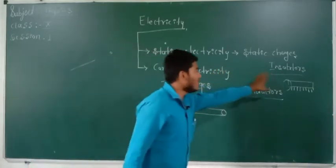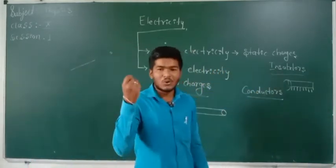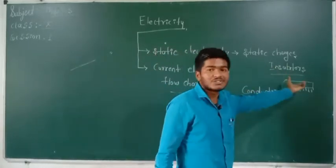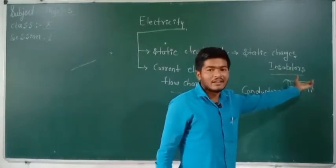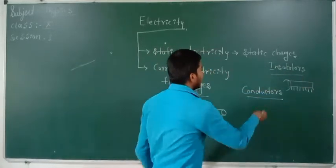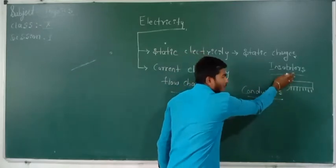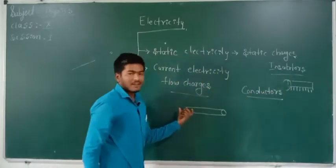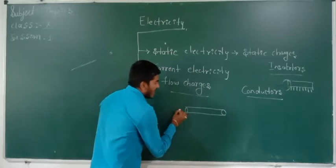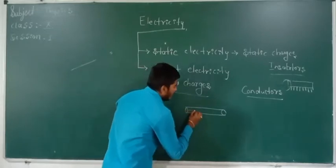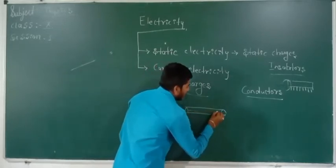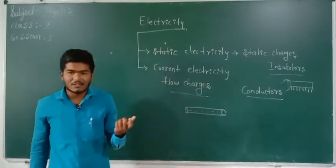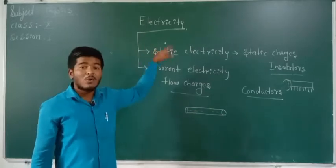In the insulator, there are no free electrons, therefore there is no conduction of current — all the charges are deposited at one point. But in the case of a conductor, the charges flow because it has free electrons in the outer shell.